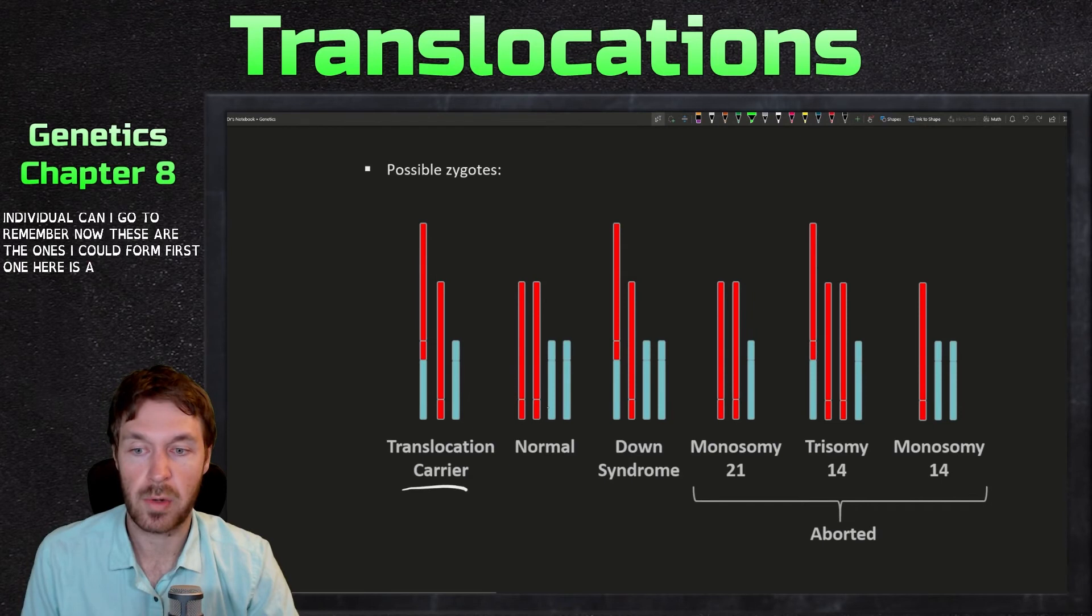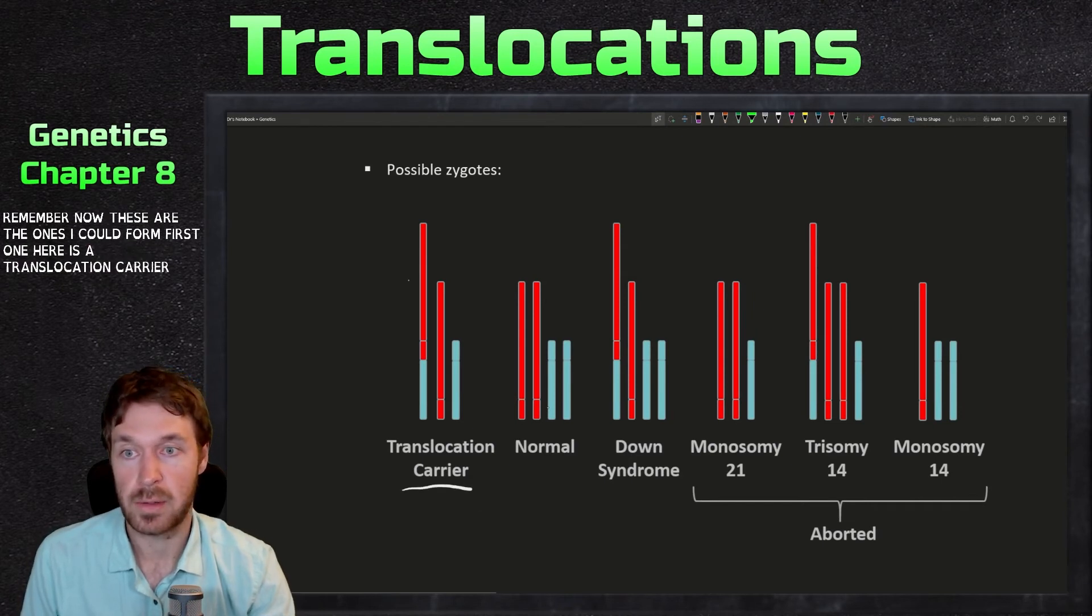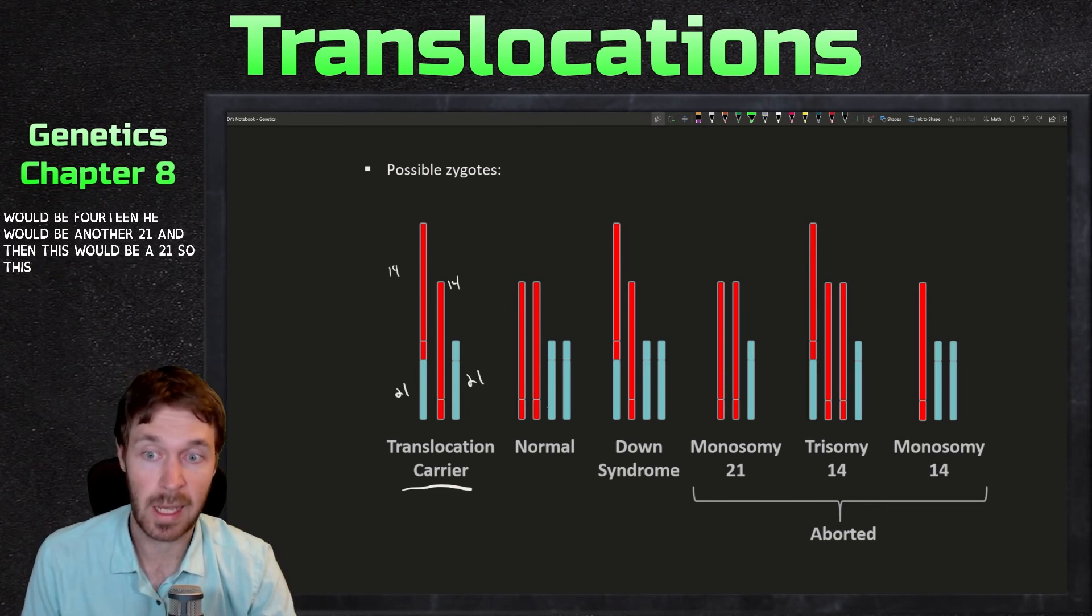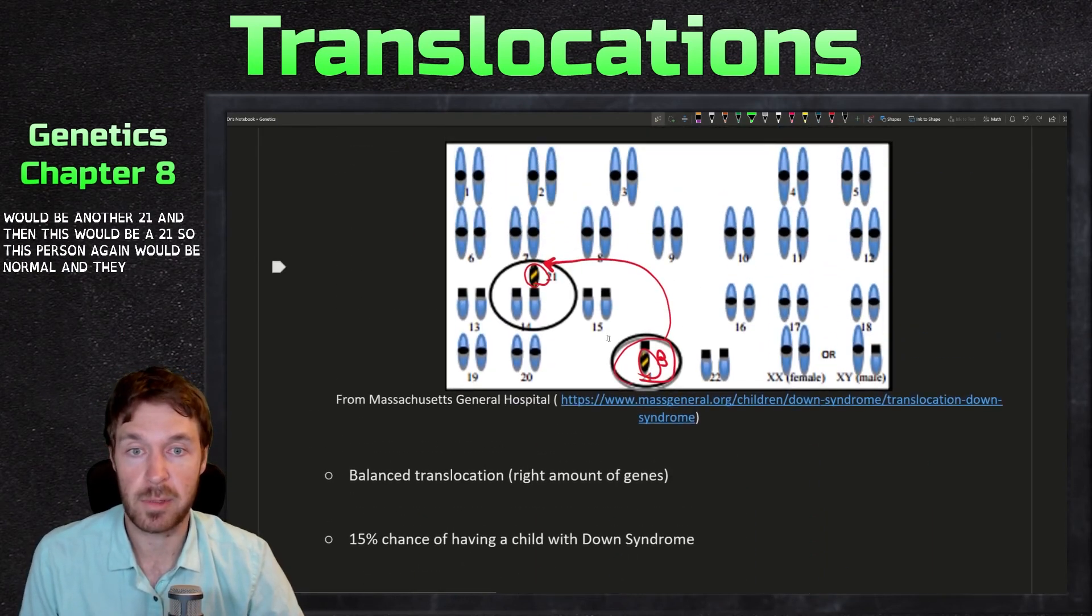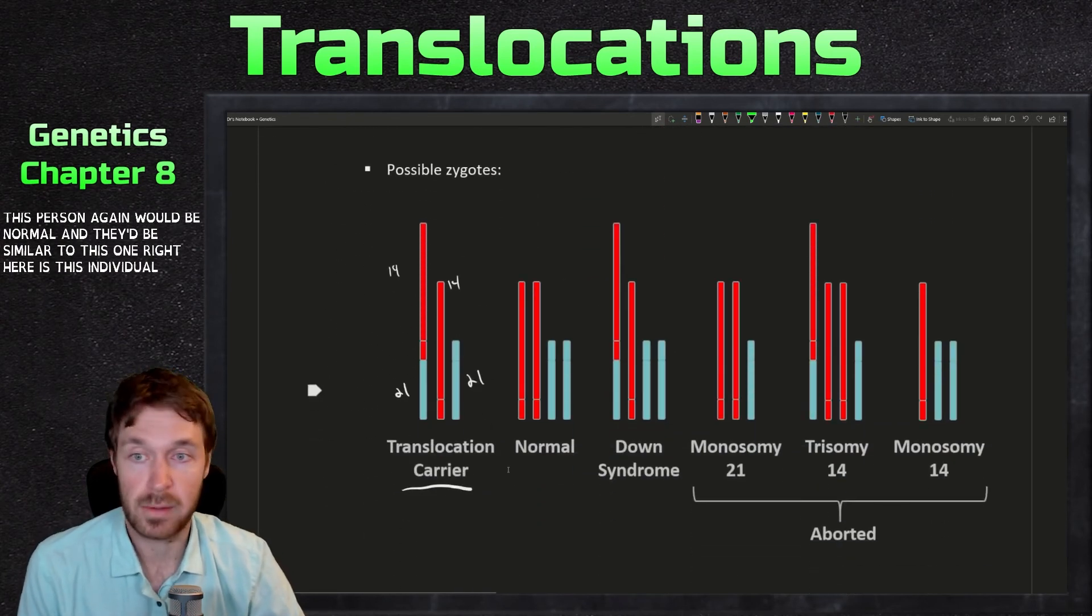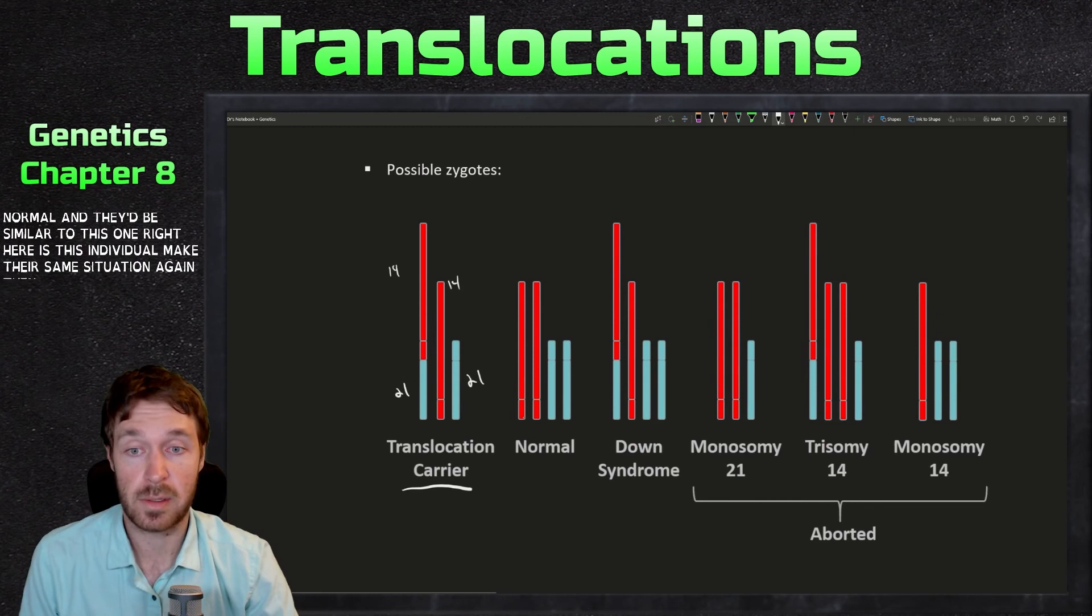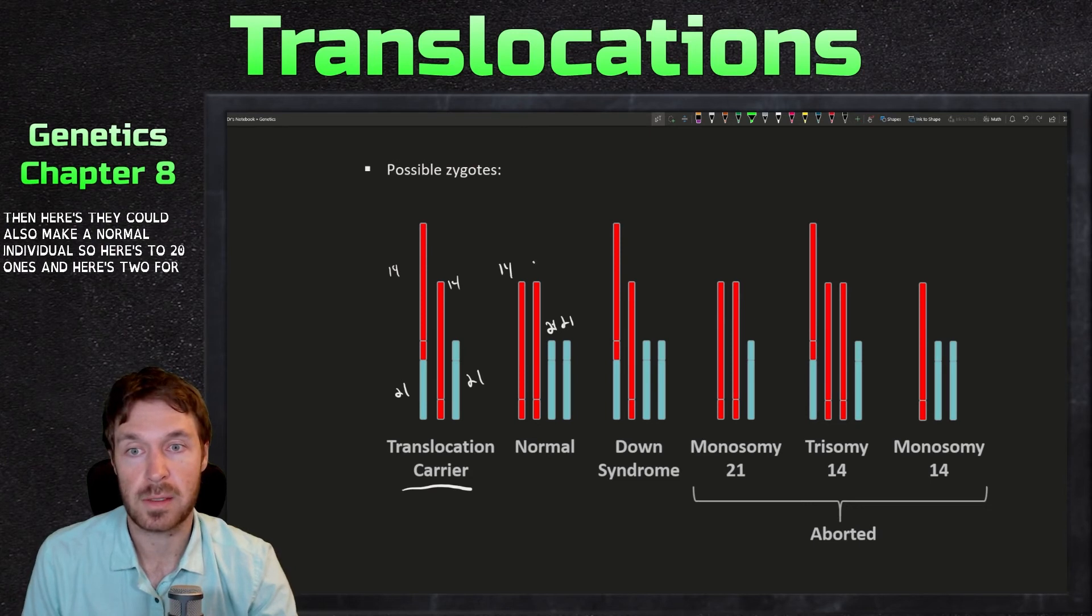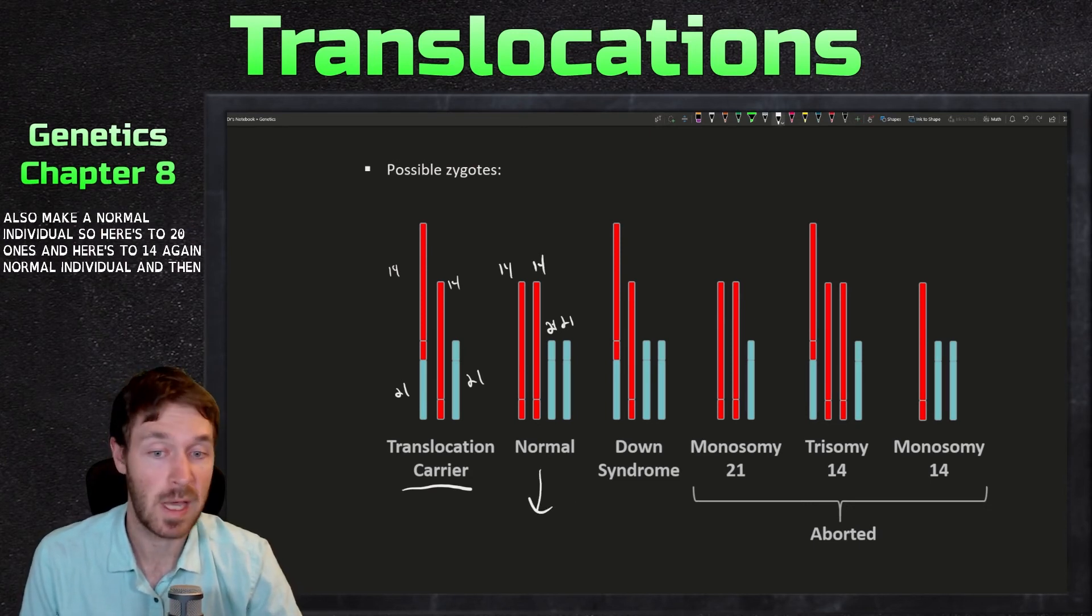So this would be 14. This would be 14. Here would be another 21. And then this would be a 21. So this person again would be normal and they'd be similar to this one right here. So this individual could make their same situation again. Then they could also make a normal individual. So here's two 21s and here's two 14s. So again, normal individual. And then this person wouldn't be able to pass anything down.